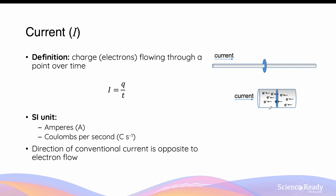The reason why the direction of conventional current and electron flow are opposite to each other is because a long time ago we used to think that current is due to the movement of positive charges in conductors rather than negative charges, which are electrons. And since then we've stuck with the convention of defining current in the direction of positive charge movement. So this is merely a convention that you have to remember and get used to.